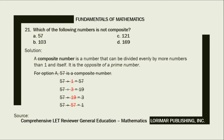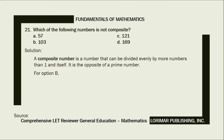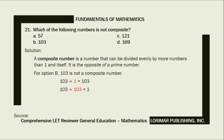So letter A is not the correct answer. For option B, 103 can be evenly divided by 1 and 103 with no remainder. Since 103 can be divided by just 1 and 103, it is not a composite number. So the correct answer is letter B, 103.